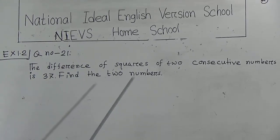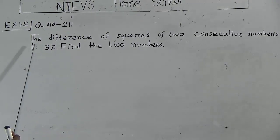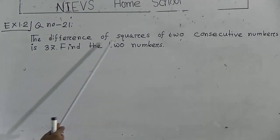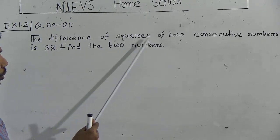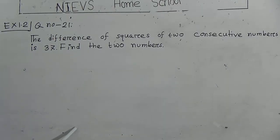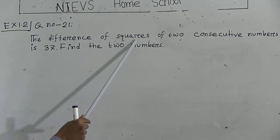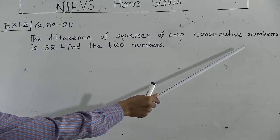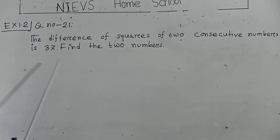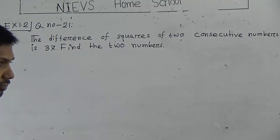Now look at Question Number 21. First, read the question properly. The question says: the difference of squares of two consecutive numbers is 37. Consecutive numbers means if the first number is x, then the second number will be x plus 1. Now find the two numbers — that means you have to determine those two numbers.